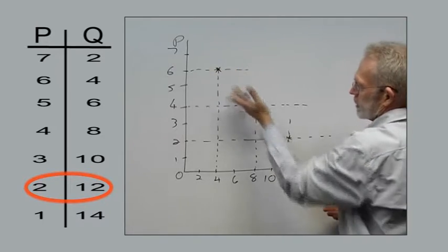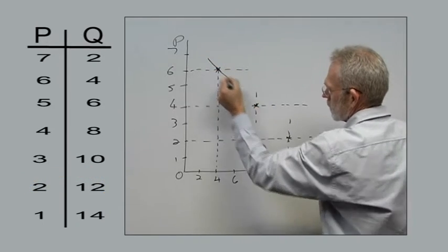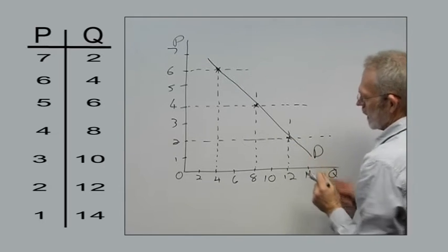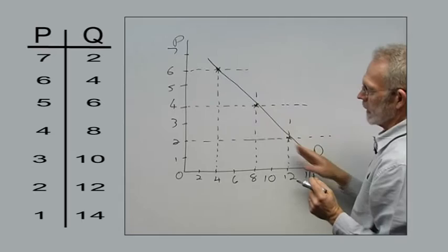If we link these points, we have a demand curve and we name it D, the demand curve.